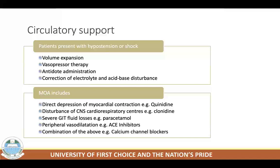Hypotension can result from secondary effects of a toxin, for example cocaine-induced myocardial infarction. Blood pressure disturbances may also represent concomitant trauma, such as severe spinal cord injury or internal hemorrhage. On the basis of the known pathophysiology of a particular drug and thorough physical assessment, you should determine the probable cause of hypotension in that patient.